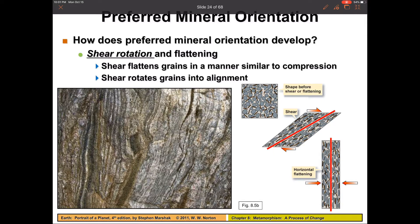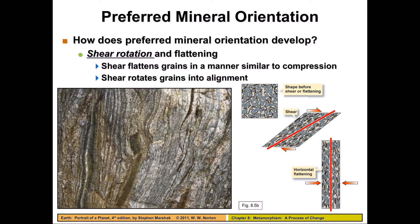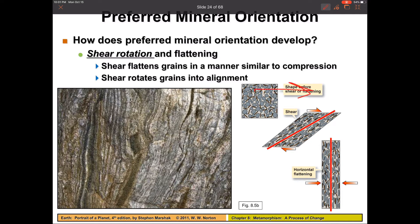As I mentioned in the last video, preferred mineral orientation can develop either with pressure solution or with plastic deformation, but it can also happen with shear rotation. As you can see in this box here, I'm going to take this rock and pull part of it this way and part of it this way, which causes what was in the center to rotate, and all these minerals start lining up parallel, whereas with plastic deformation and flattening, they're lining up perpendicular.